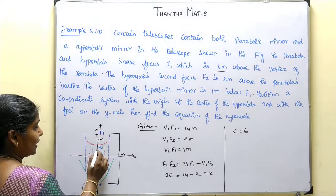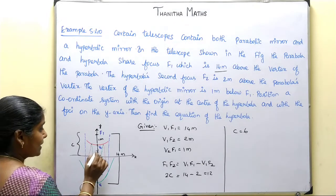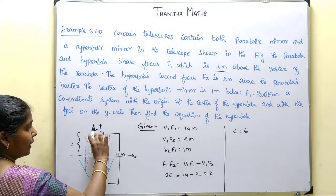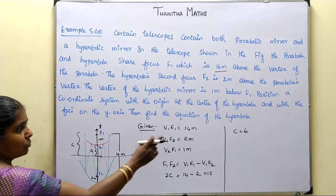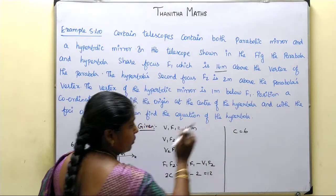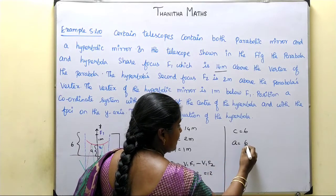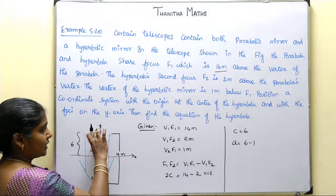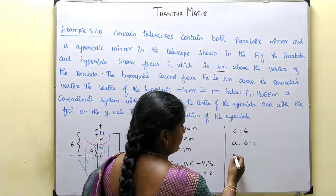Looking at the distances: the center to f1 equals c equals 6. The vertex-to-center distance gives us a. Since the vertex of the hyperbola is 1 meter below f1, and c equals 6, we subtract: a equals 6 minus 1, so a equals 5.